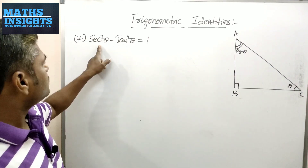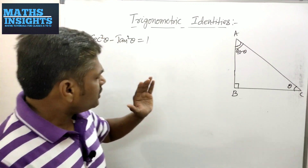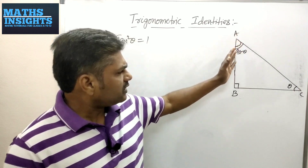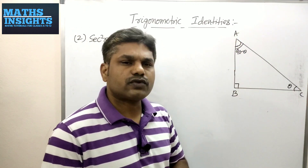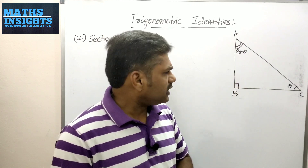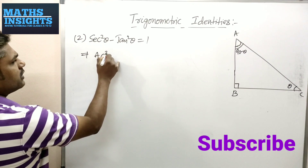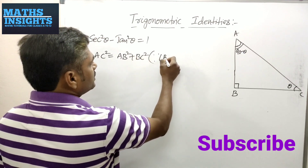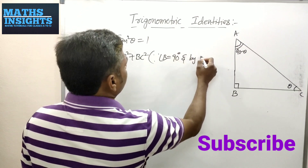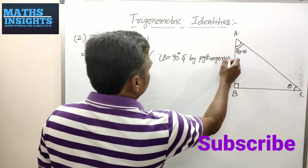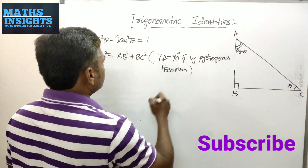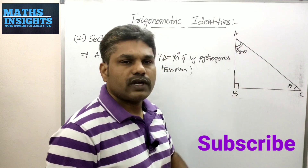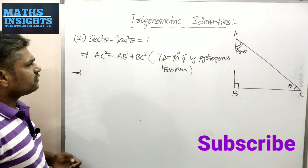Now we will go for the second identity: sec²θ − tan²θ = 1. In a similar manner to what we did for the previous identity, we will proceed in the same way. Since we are using the same triangle in which angle B = 90°, we apply Pythagoras theorem: AC² = AB² + BC².